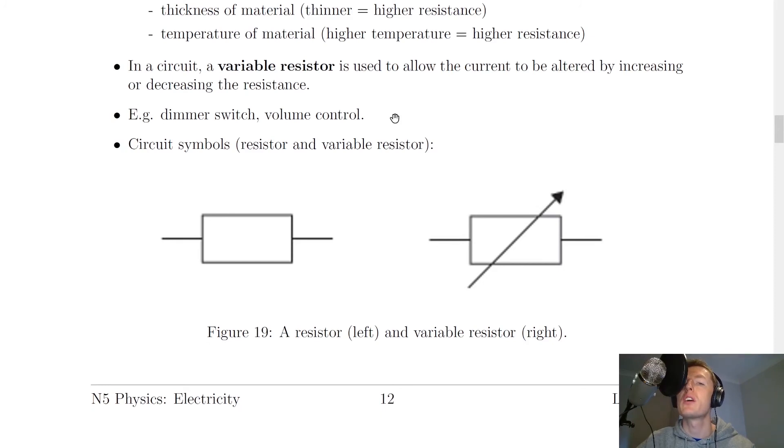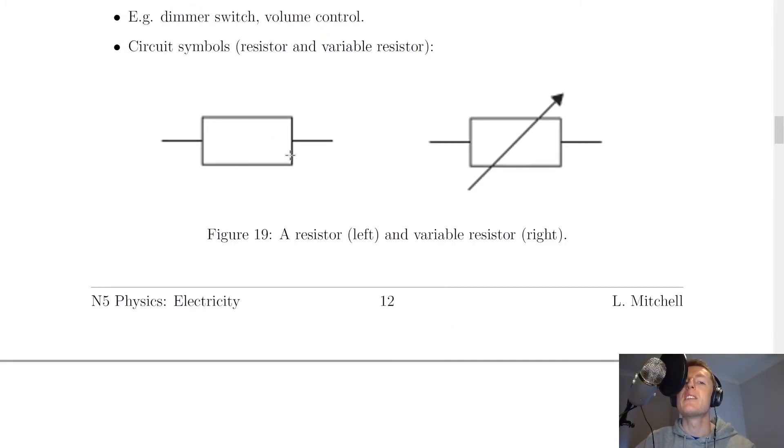The last thing we'll look at here is the circuit symbols for a resistor and a variable resistor. You'll notice the resistor is quite basic - it's just a box shape, a rectangle. Whereas the variable resistor, as shown in the right here, is the same but with an arrow going diagonally through the resistor. So we've got a resistor on the left and a variable resistor on the right.